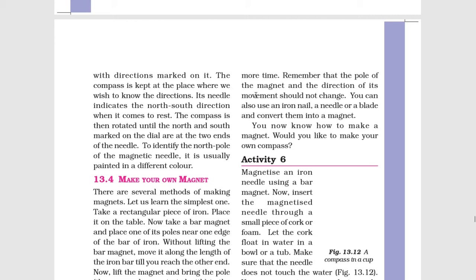Remember that the pole of the magnet and the direction of its movement should not change. You can also use an iron nail, a needle, or a blade and convert them into a magnet. Now you know how to make a magnet. Would you like to make your own compass?